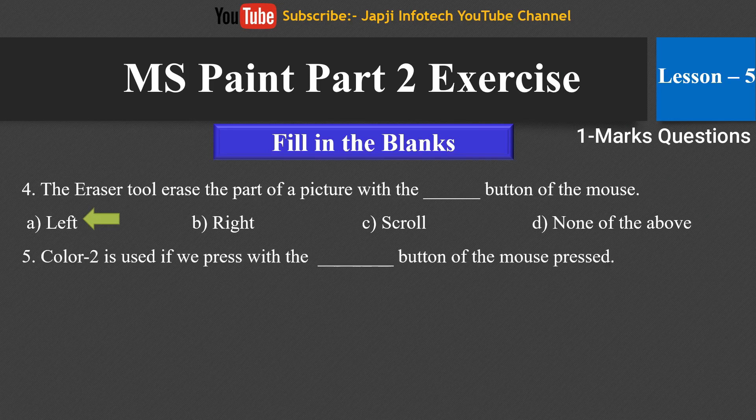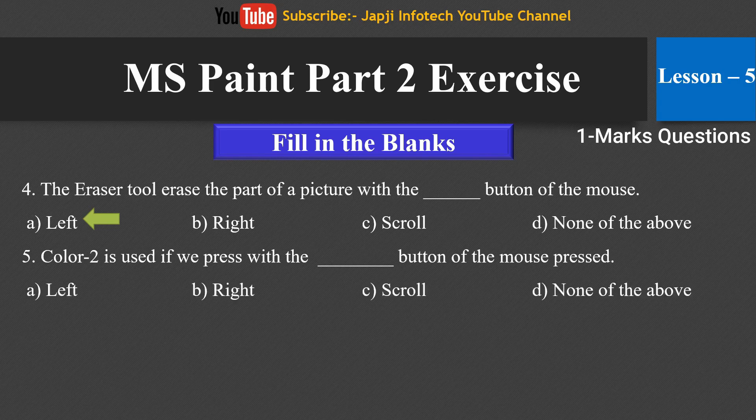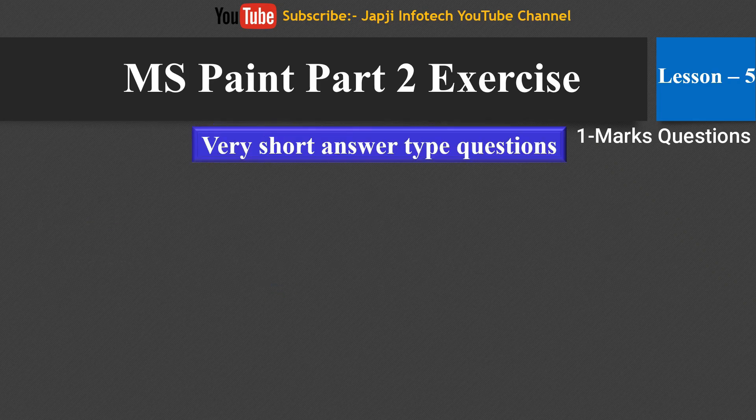The next fill in the blank is: Color 2 is used if we press with the ___ button of the mouse. The options are left, right, scroll or none of the above. The right answer is: Color 2 is used if we press with the right button of the mouse.